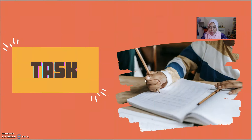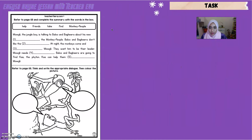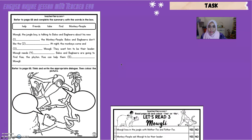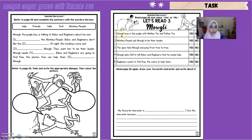Now we have come to the task for today. You will be given two kinds of worksheets. For the first worksheet, the first exercise — you have to choose the answer and fill in the blanks. Then the second exercise — you have to think and write the appropriate dialogue: what do you think the monkey says and what do you think Mowgli is saying. For the second worksheet, the first exercise you have to read and answer yes or no; the second exercise you have to draw your favorite character and write about it.